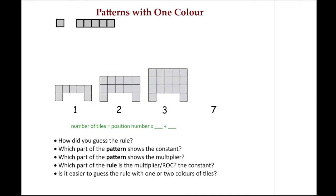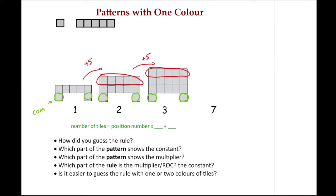One last example. Again, we're looking at patterns with one color. This one may be a little bit easier. I know position one, two, three, and I'm looking for position seven. I need to think about what is changing in my pattern every time, and look for the multiplier and the constant. I should be able to see that these two little legs here don't really seem to change as I go from position to position. The only thing that's changing is that I'm adding a new row on top — or in other words, I'm adding five every single time, a row of five. These little green parts are staying the same, so my green parts are my constant and the five or plus five represents the multiplier.